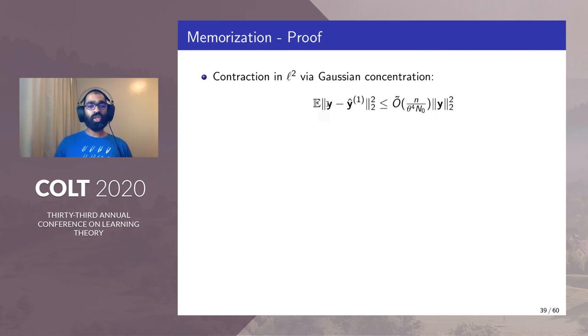A simple calculation via Gaussian concentration shows that the L2 norm of the error labels contracts with respect to the L2 norm of the original labels by this factor. So therefore if we use at least n/θ⁴ neurons there is a contraction.